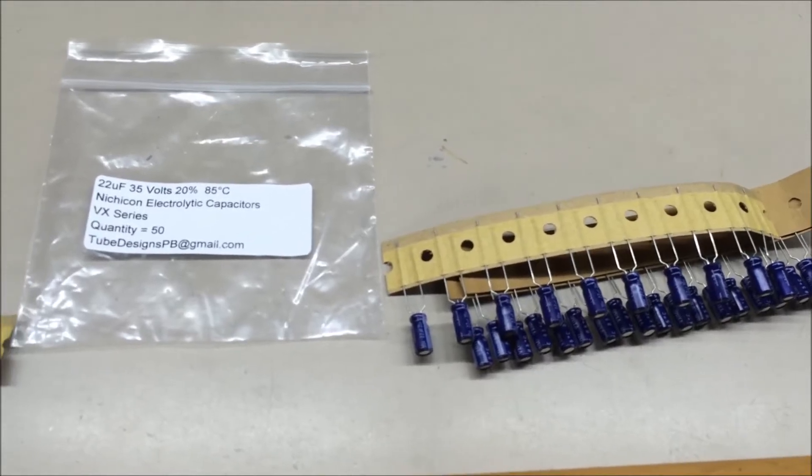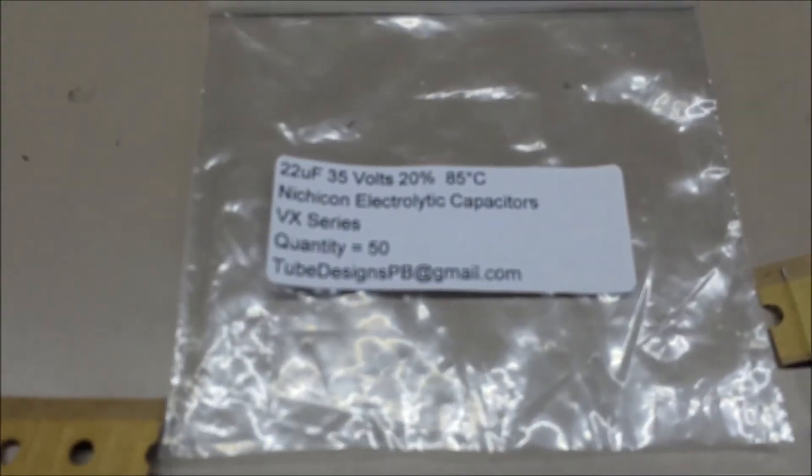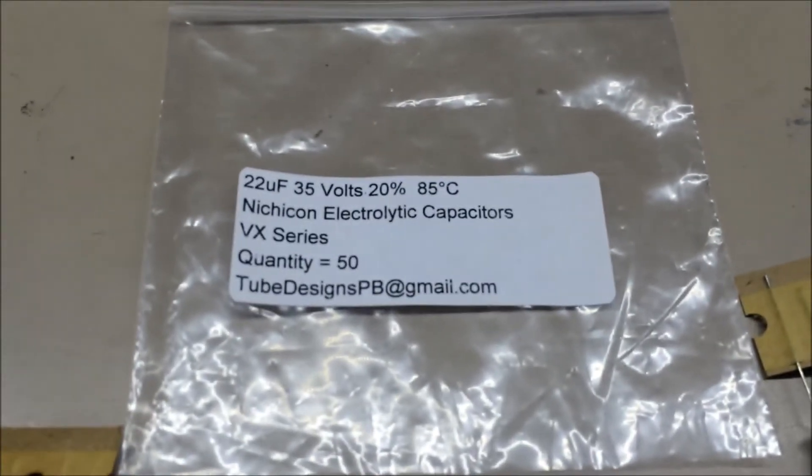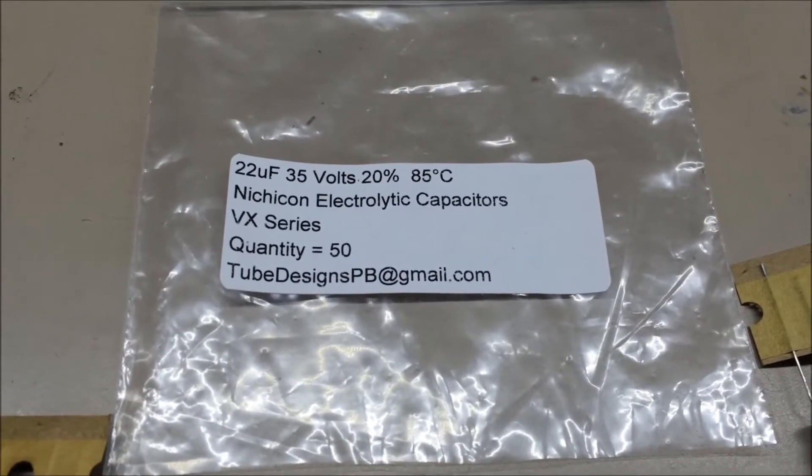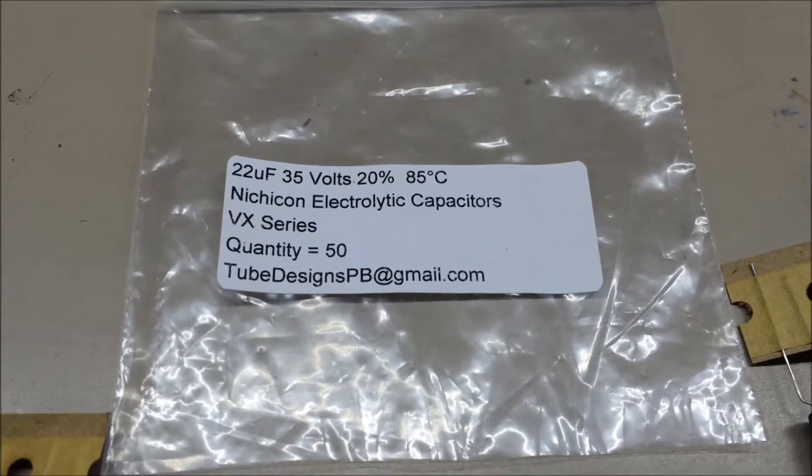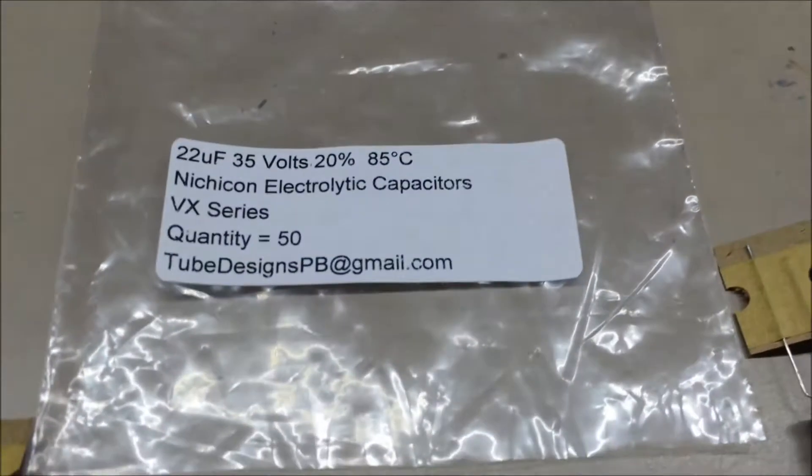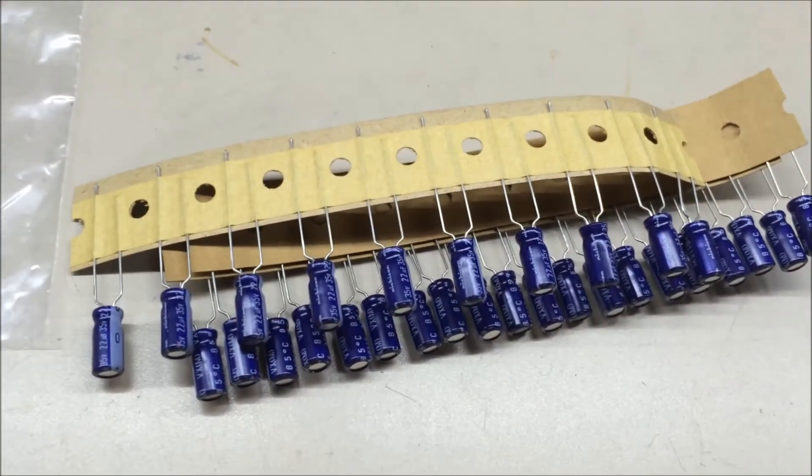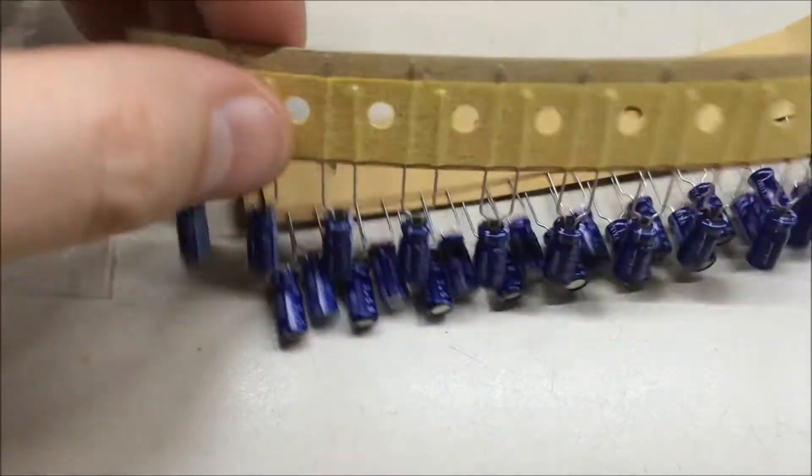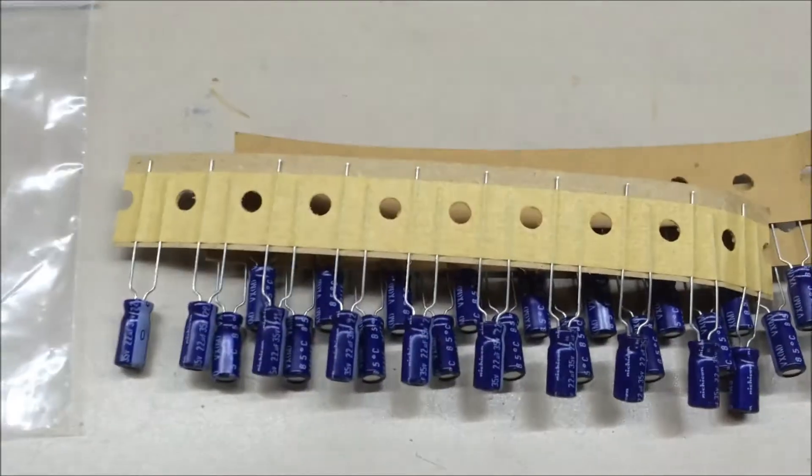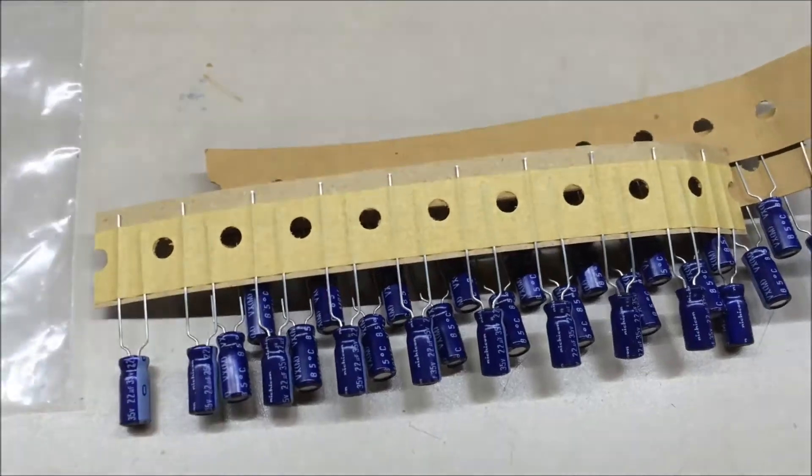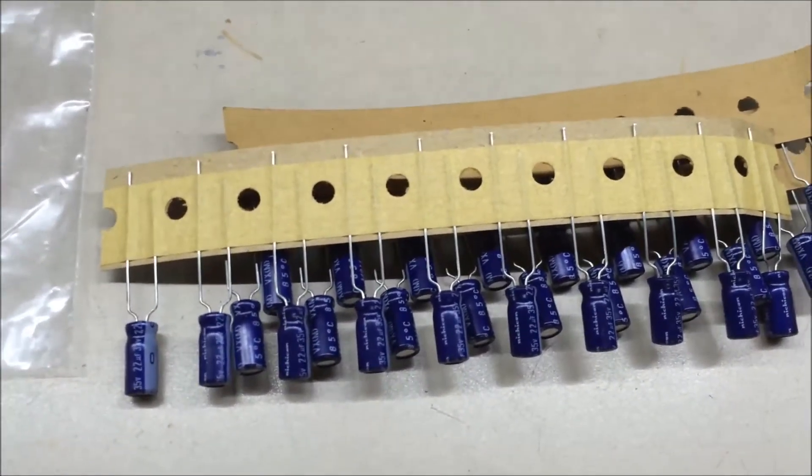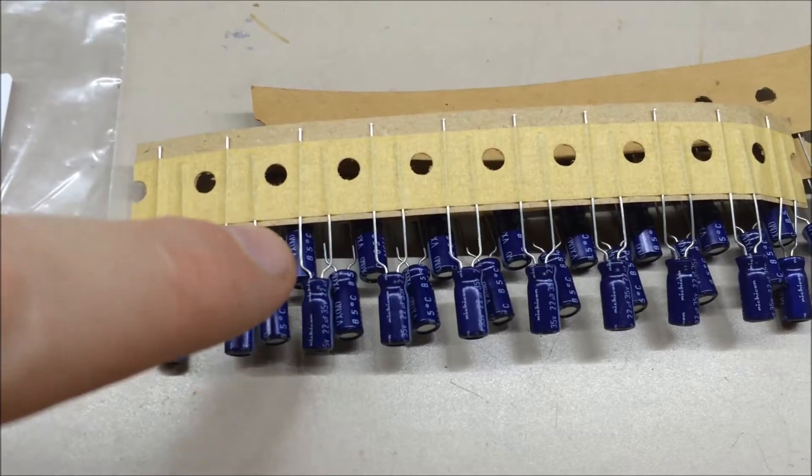If you'll notice, I buy a lot of capacitors in bulk, various values. I got 50 of these 22 microfarad 35 volt capacitors, really good brand, the Nichicon, and they came in a little pack here. But if you'll notice they come on these tape boards, and these are what are used in the machines that actually put equipment together. These things get machine fed and whatnot, and if you've ever tried to remove these things from this tape, it is a pain.